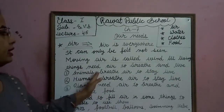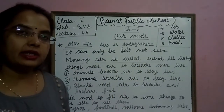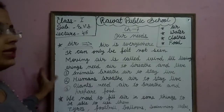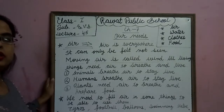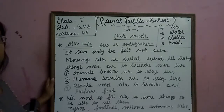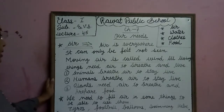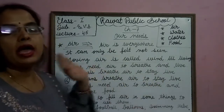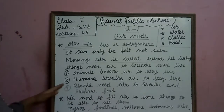All living things need air to breathe and live. Joh living things hooti hain, unko jivit rahne ke liye Air ki requirement hooti hain. Living things — jaise animals hain, humans hain, ham log hain. Ham log sab air mein hi toh saans lete hain. Number one: animals breathe air to stay alive. Animals ko jivit rahne ke liye Air ki requirement hooti hain.